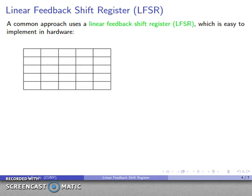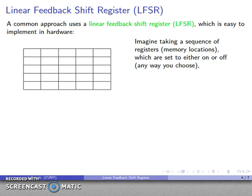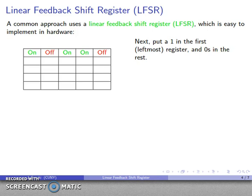And so a common way of generating a pseudorandom sequence uses what's called a linear feedback shift register. And the reason that this is really common is that it's a very easy thing to implement in hardware. And so what we're going to do, where it gets its name from, is the following. So what we're going to start off with is we're going to take a sequence of registers, basically memory locations, and we're going to set these to either on or off any way that we want to. And so I set the first one to on, second off, on, on, off. And what I'm going to do is I'm going to put a 1 in the leftmost register, the first register, and 0s in all of the rest of them.